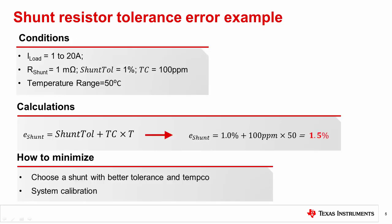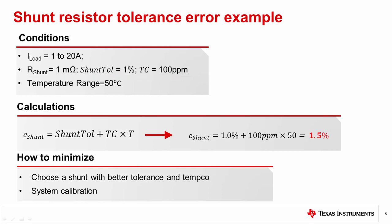In this example, we wish to measure a load current in the range of 1 to 20 amps. The shunt has the following specifications: nominal resistance equal to 1 milliohm, initial tolerance equal to 1%, and temperature coefficient equal to 100 ppm. Using our shunt error equation, we calculate that the resulting error is 1.5%.